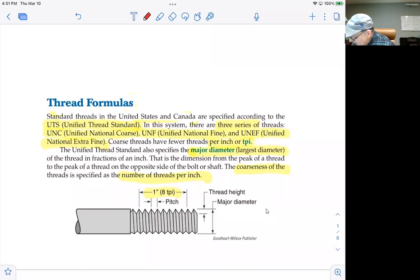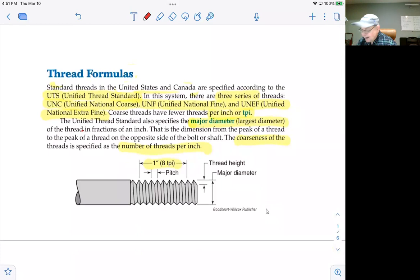Thread formulas come from the specification, or they're derived from the specification, the UTS, Unified National Standard. Below is a picture of a bolt that has most of the major things specified on there in dimensions. For instance, if you look at this dimension right here, that's called the major diameter. It is the distance from the peak of the thread on one side of the bolt to the peak of the thread on the opposite side. The next one, the thread height, that's the height from the base of the thread to the peak of a thread. And all these threads are the same, by the way.